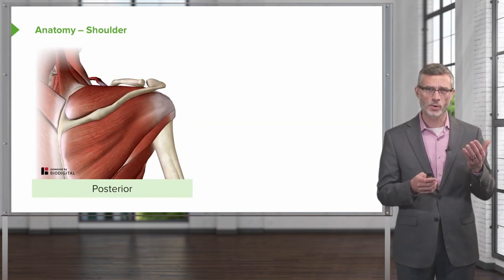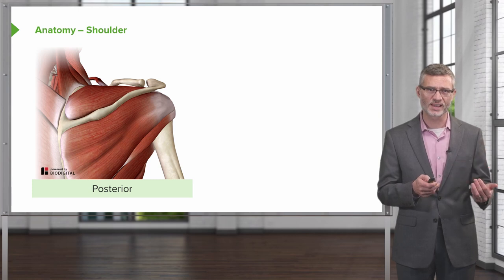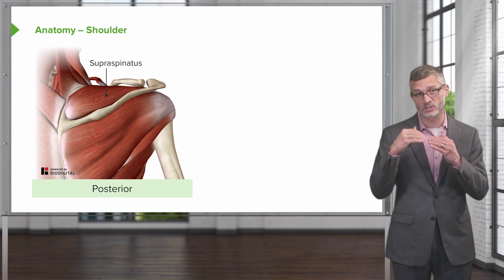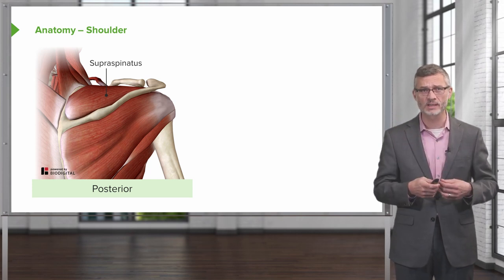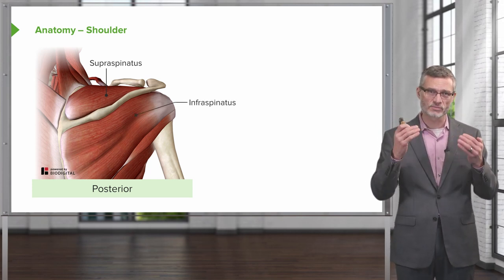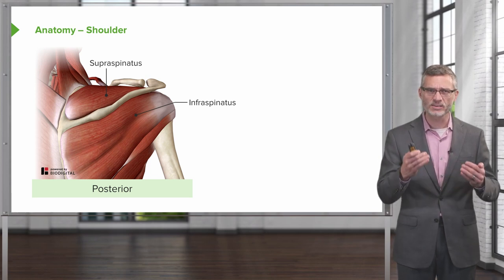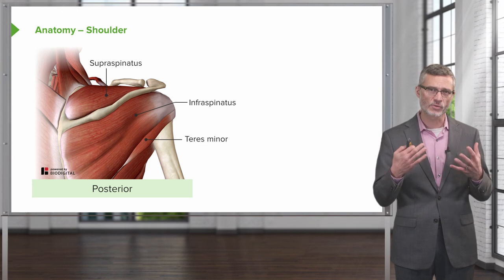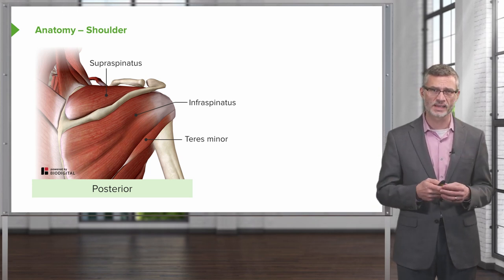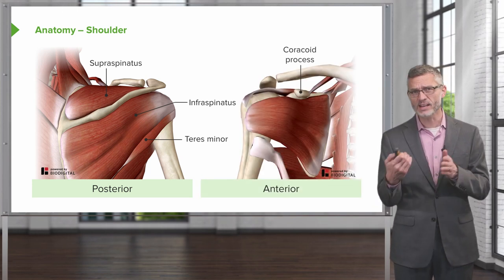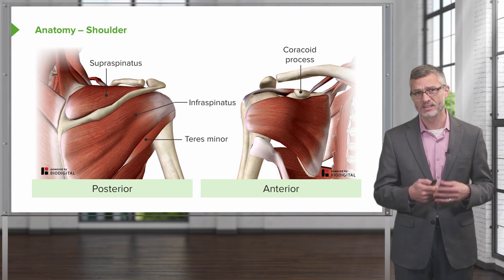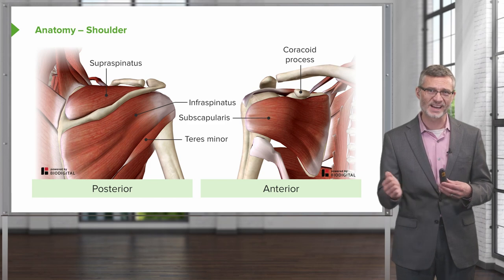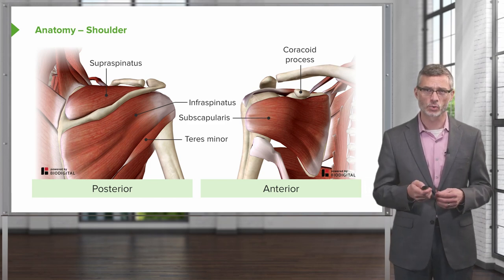Shown here is a posterior view of the shoulder on the left. The supraspinatus is so named because it is above the spine of the scapula, and the infraspinatus is beneath it. In tandem with the infraspinatus is the teres minor, which has a lot of overlapping functions. On the anterior image shown on the right is the subscapularis muscle, which is the primary driver for internal rotation of the shoulder.